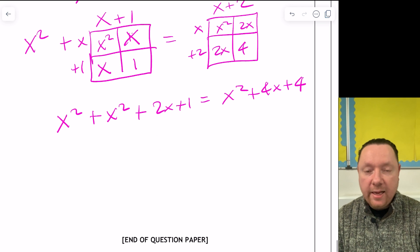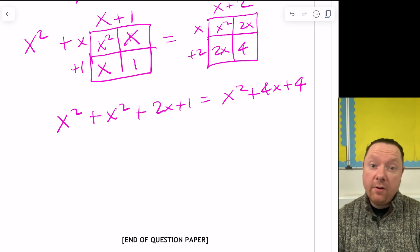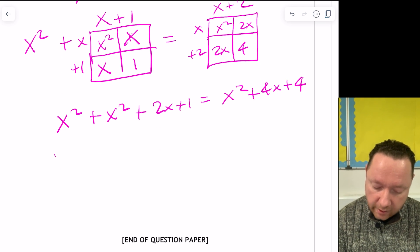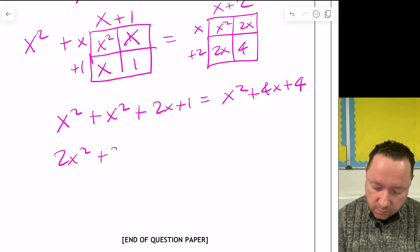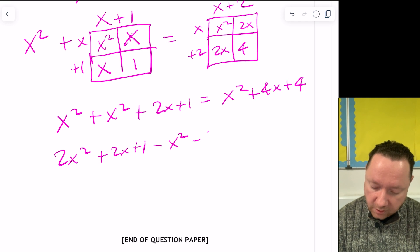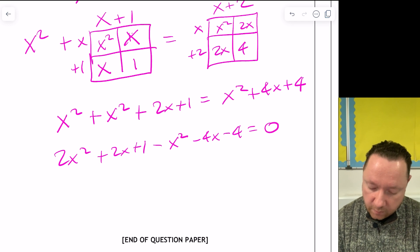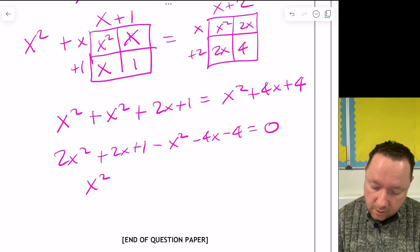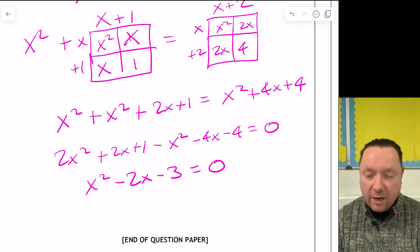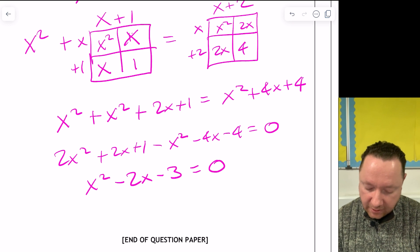Collecting like terms. It is a quadratic, so I get everything on the left. So I've got x squared plus x squared is 2x squared plus 2x plus 1. Then moving, x squared minus x squared minus 4x minus 4 equals 0. So 2x squared minus x squared is x squared. 2x minus 4x is minus 2x. 1 minus 4 is minus 3. So I get it down to a quadratic, which I can solve by factorising.